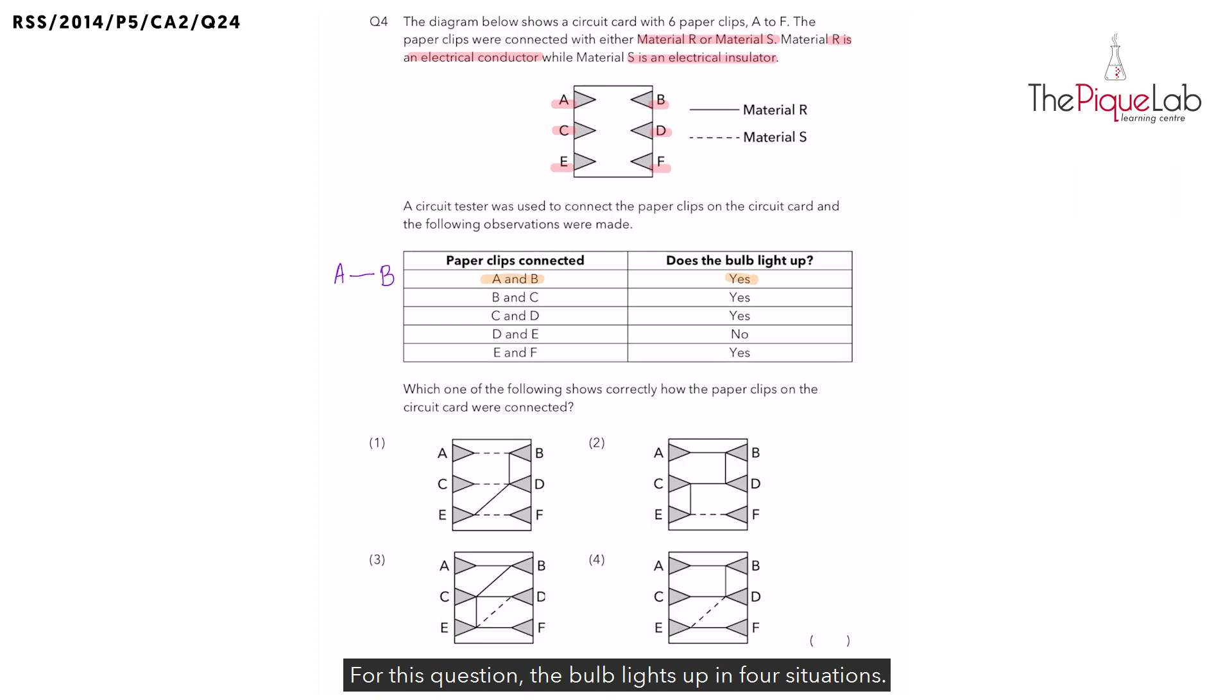For this question, the bulb lights up in four situations. So it may be more useful to look at that one time the bulb did not light up when points D and E were tested.